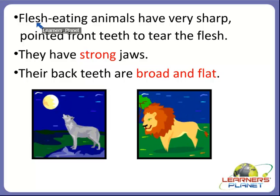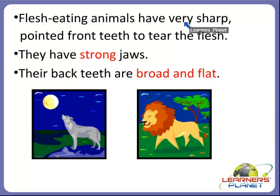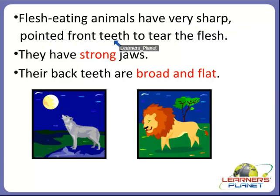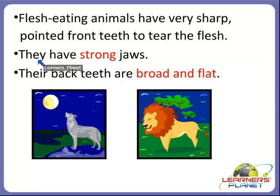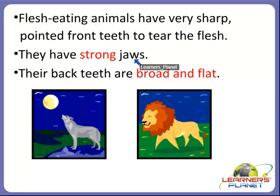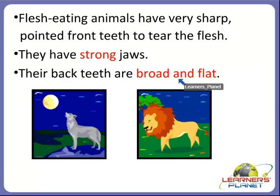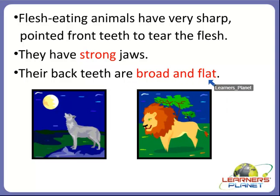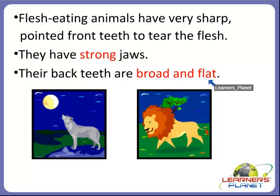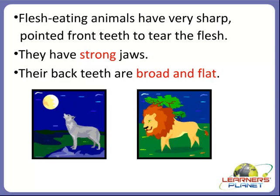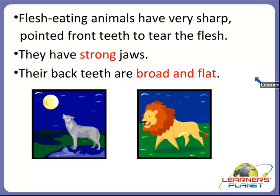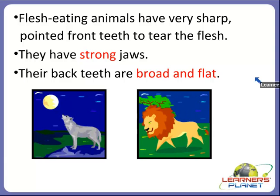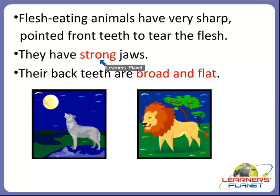Flesh eating animals have very sharp pointed front teeth to tear the flesh, and they also have strong jaws. Their back teeth are broad and flat, and these animals chew the flesh with their back teeth. For example, a fox, a lion, a tiger and a dog. Such animals have very strong jaws.